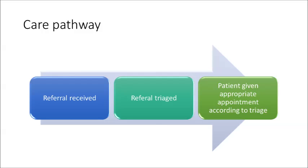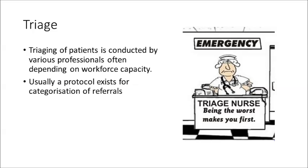The figure here shows roughly how it works. A referral comes in, the referral is triaged, a decision is made about the urgency of care and the type of clinic, and then the patient is given the appropriate appointment according to triage. Or, if they've been referred wrongly, the referrer is informed. Triaging of patients is conducted by various professionals, and it often depends on workforce capacity as to who does that.